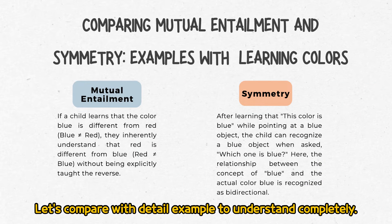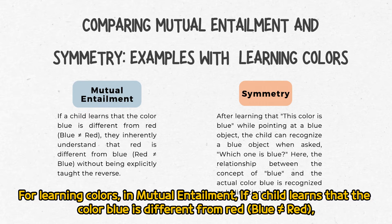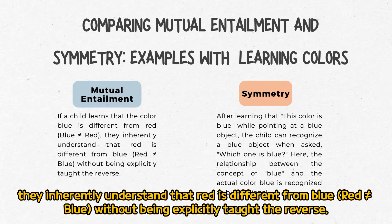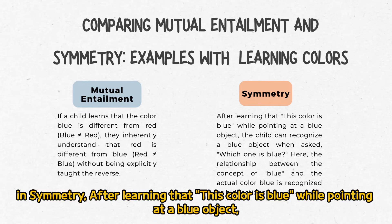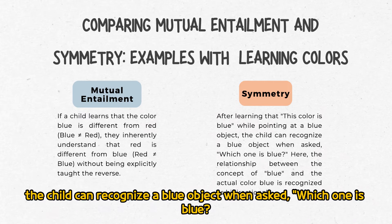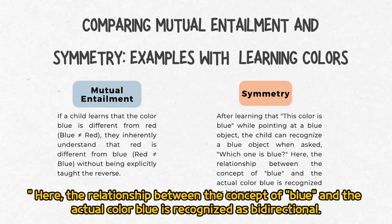Let's compare with a detailed example to understand completely. For learning colors — in mutual entailment, if a child learns that the color blue is different from red, they inherently understand that red is different from blue without being explicitly taught the reverse. In symmetry, after learning that 'this color is blue' while pointing at a blue object, the child can recognize a blue object when asked 'which one is blue?' Here, the relationship between the concept of blue and the actual color blue is recognized as bidirectional.